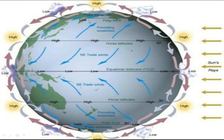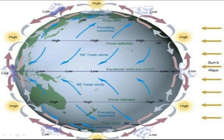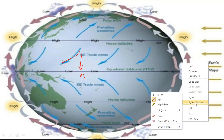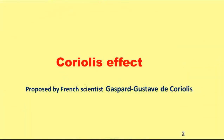However, air does not move in a straight direction on the earth's surface. It slightly diverts its angle. This diversion is due to a phenomenon called the Coriolis effect. In the northern hemisphere, winds deflect to the right; in the southern hemisphere, they deflect to the left. The effect is due to the rotation of the earth.